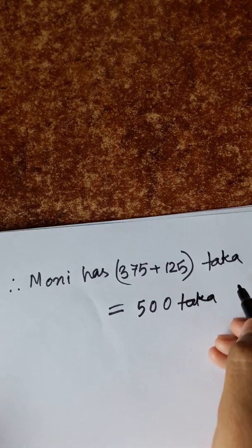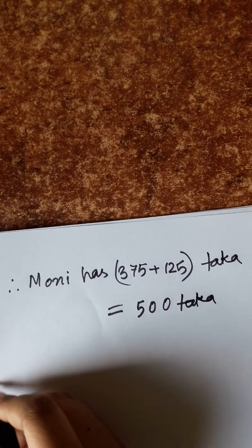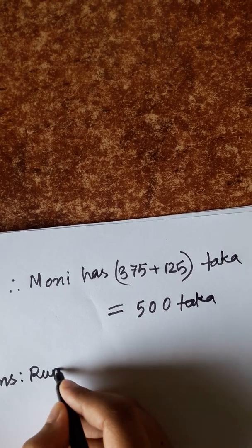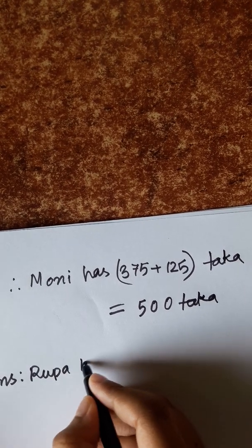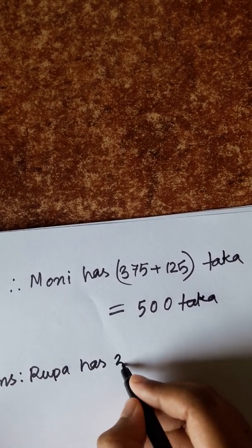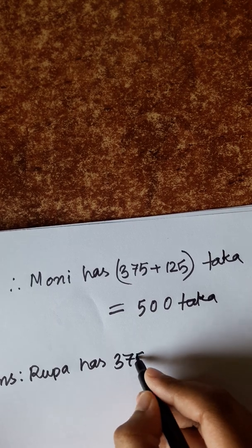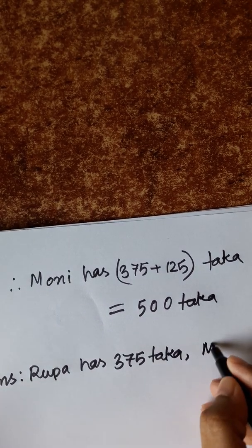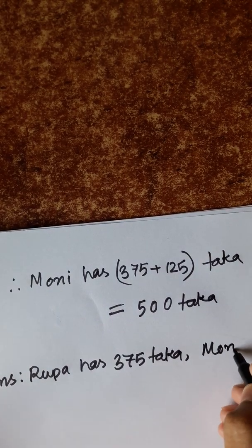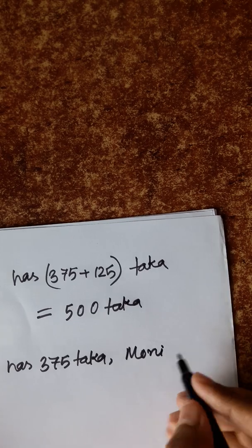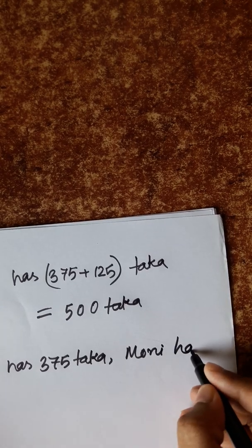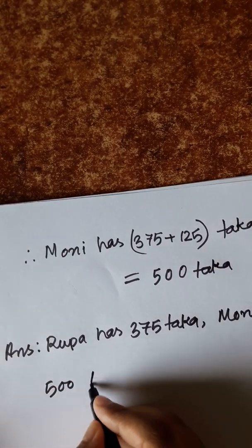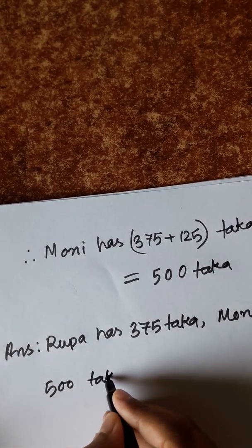The answer is: Rupa has 375 Taka, and Moni has 500 Taka.